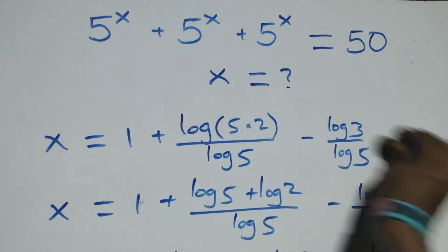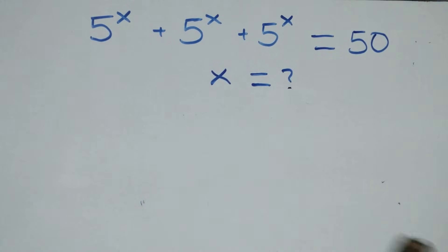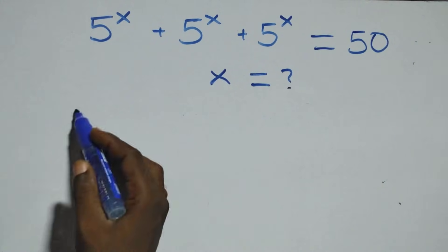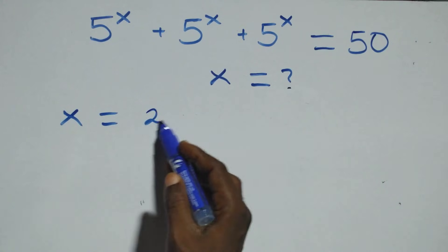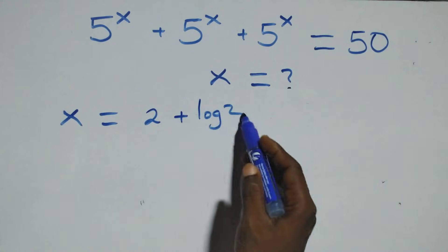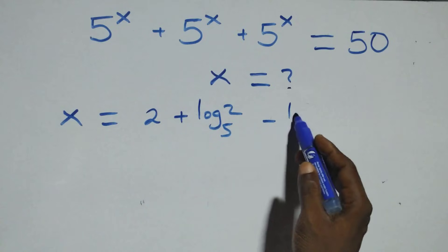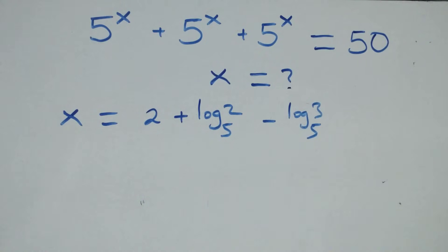Applying the change of base rule — where log a over log b is the same as log base b of a — we substitute and get x equals 2 plus log 2 base 5, minus log 3 base 5.